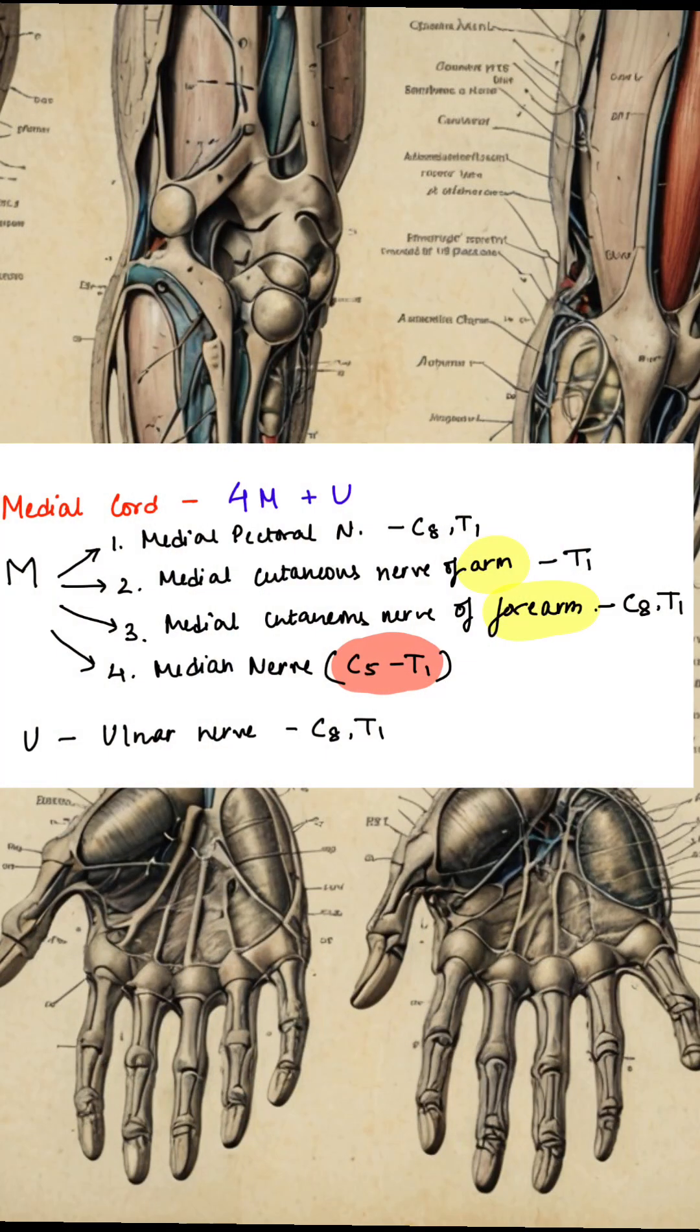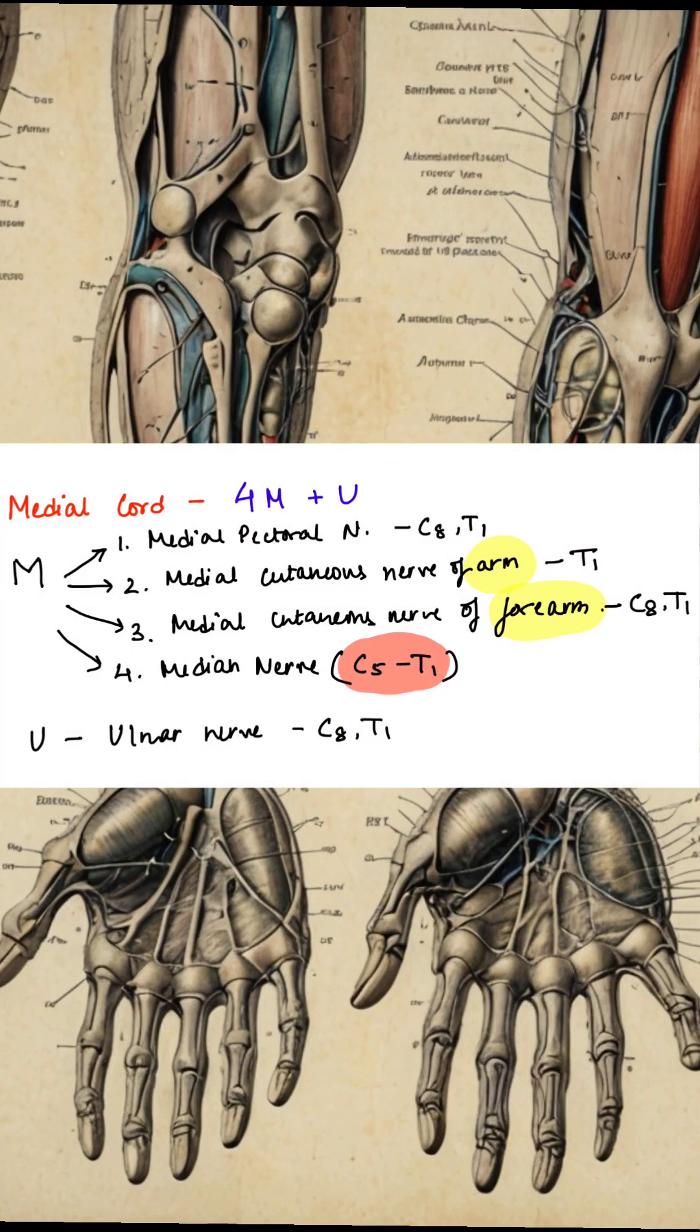For the medial cord, you can memorize the branches with 4M plus U: Median pectoral nerve, medial cutaneous nerve of arm, medial cutaneous nerve of forearm and the median nerve. U is the ulnar nerve.